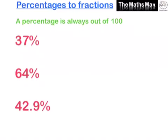The most important thing to remember is that a percentage is always out of 100. If you remember this, changing percentages to fractions is very easy. So for example, 37% is the same as 37 out of 100, and it's as simple as that.